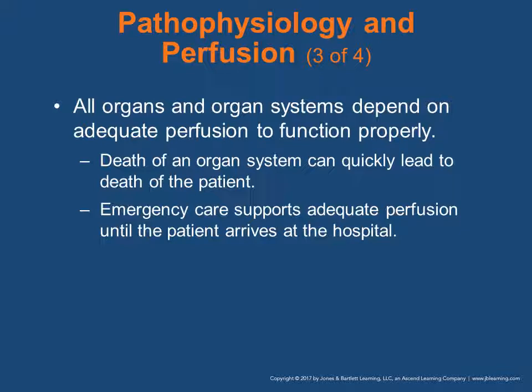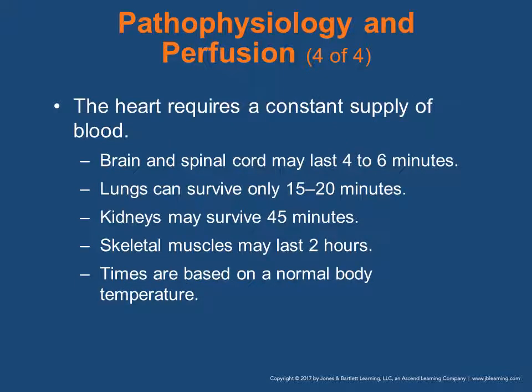Death of an organ system can quickly lead to the death of a patient. Emergency care supports adequate perfusion until the patient arrives at the hospital. The heart requires a constant supply of blood. The brain and spinal cord may last four to six minutes. Lungs can survive only about 15 to 20 minutes. Kidneys may survive 45 minutes. Skeletal muscles may last two hours, but these times are based on a normal body temperature.